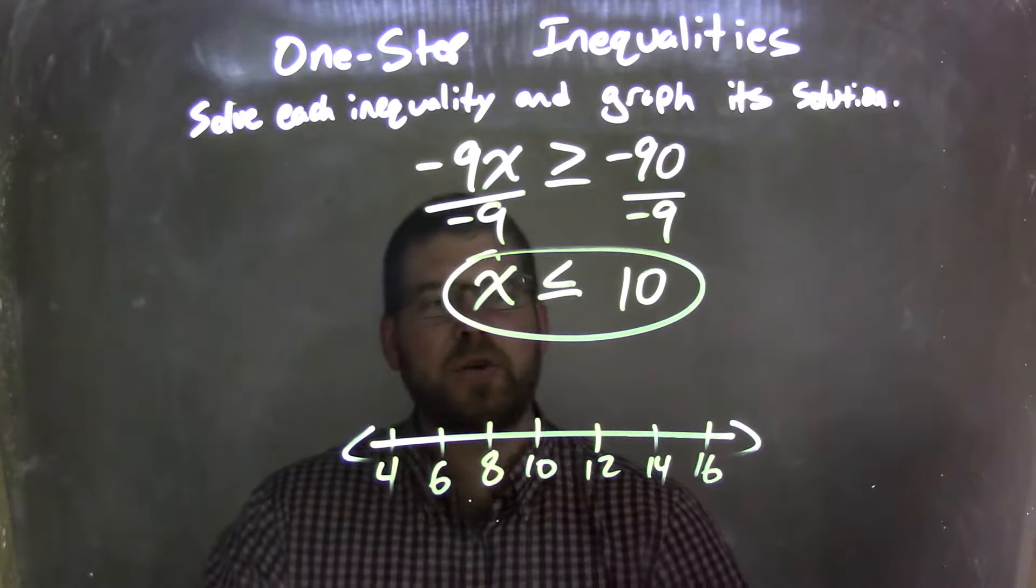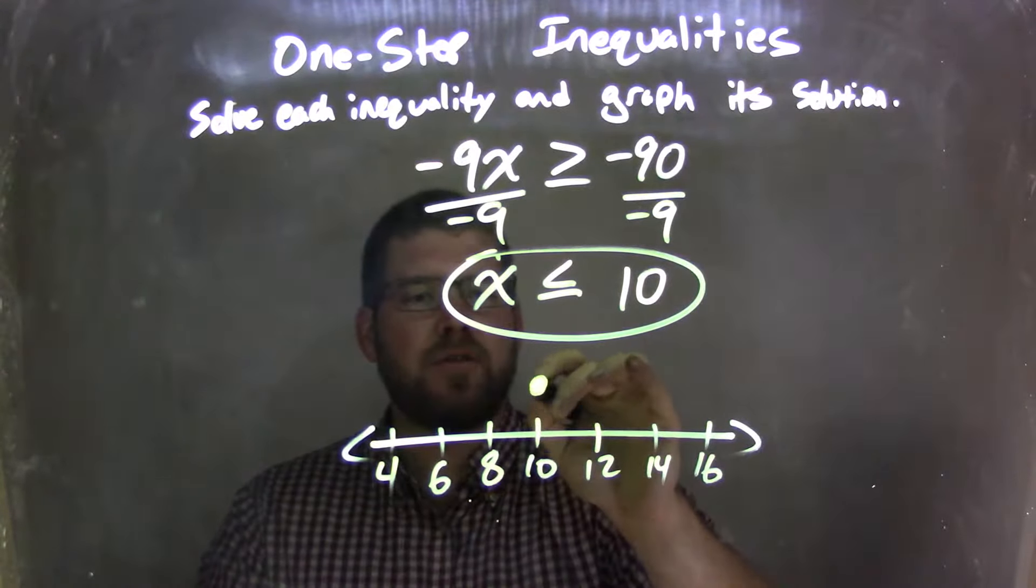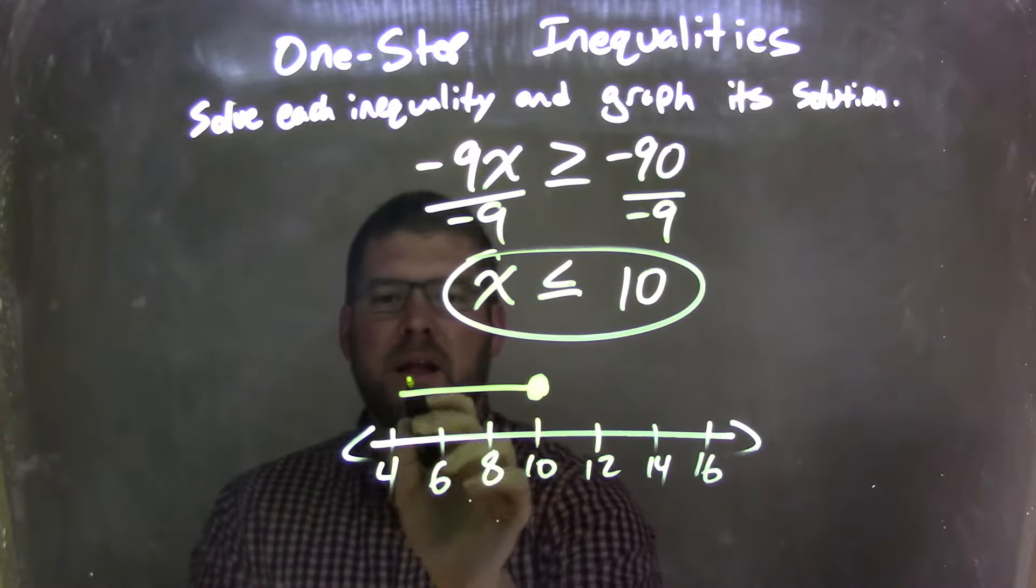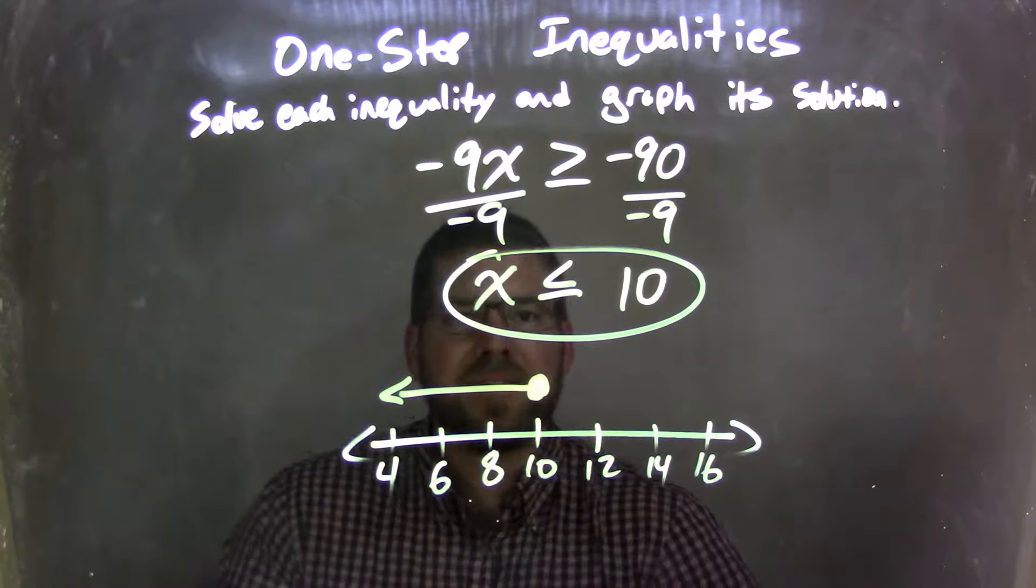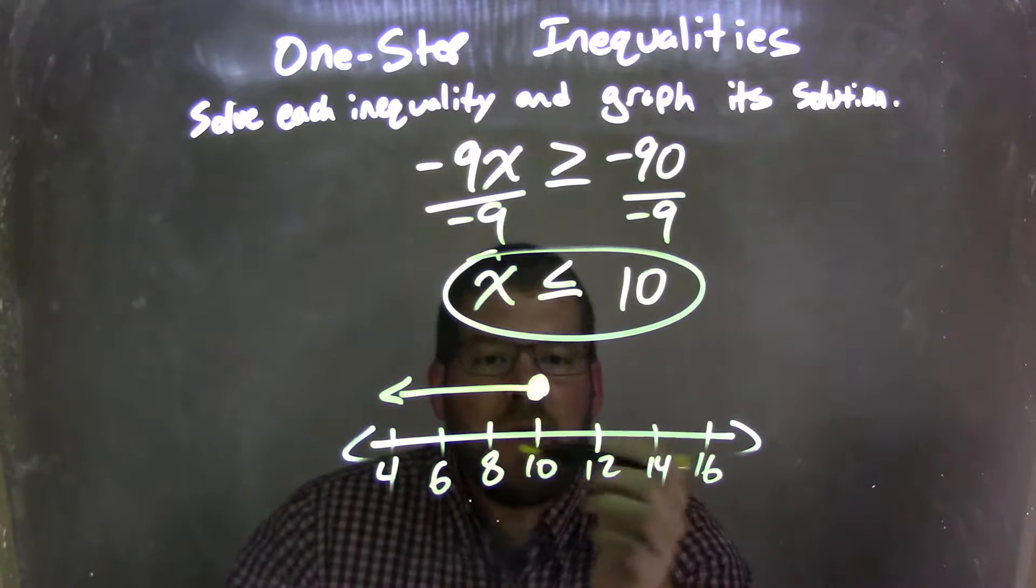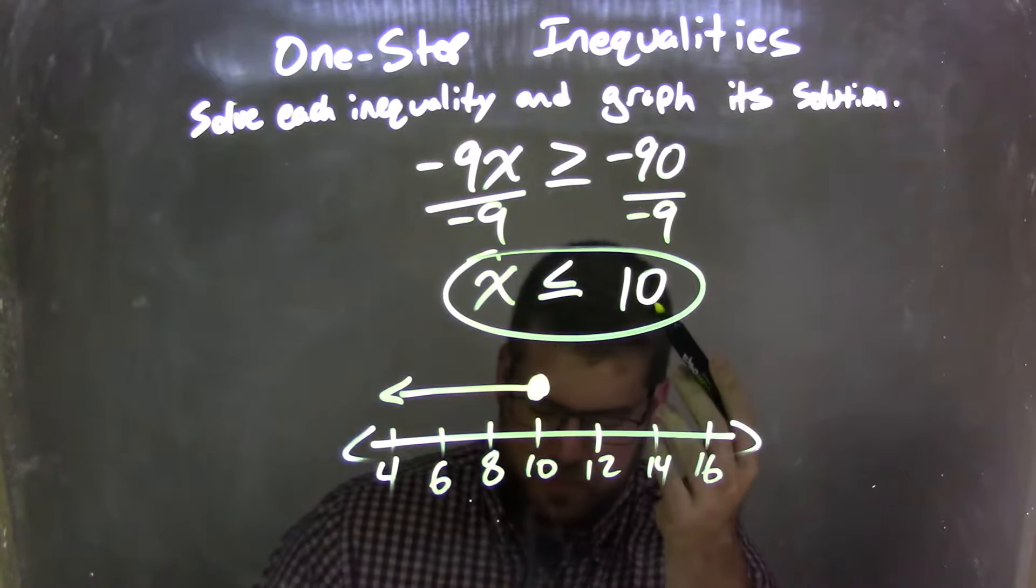So x is less than or equal to 10. At 10 I have a closed circle, and since it's less than, I'm going to draw my arrow to the left from there. And so we have x is less than or equal to a positive 10, and there we go. We have our graph here that matches our inequality.